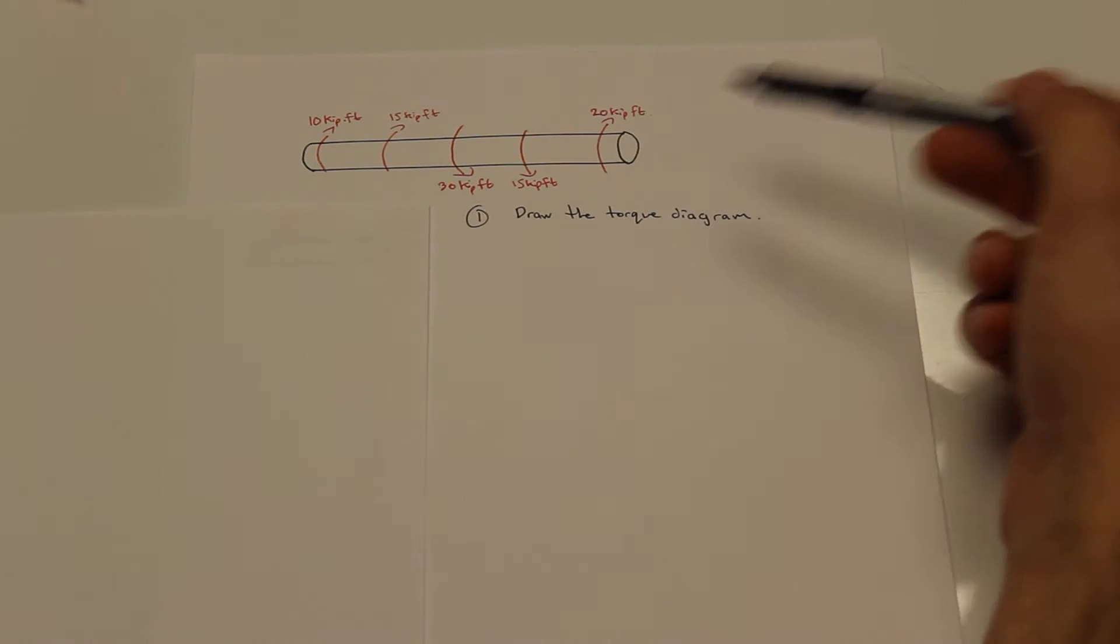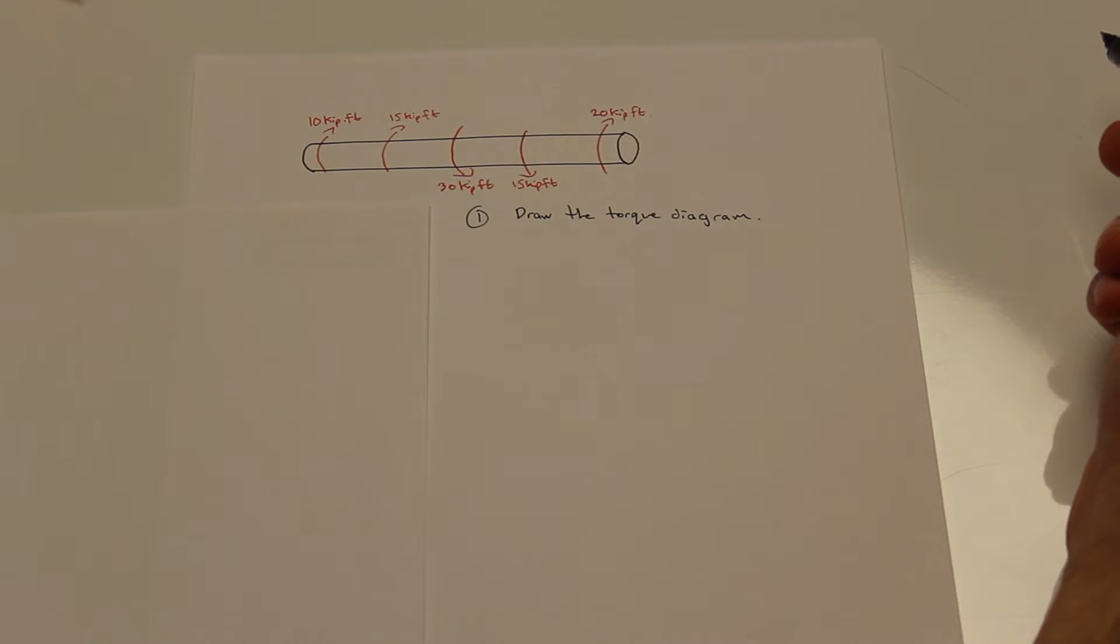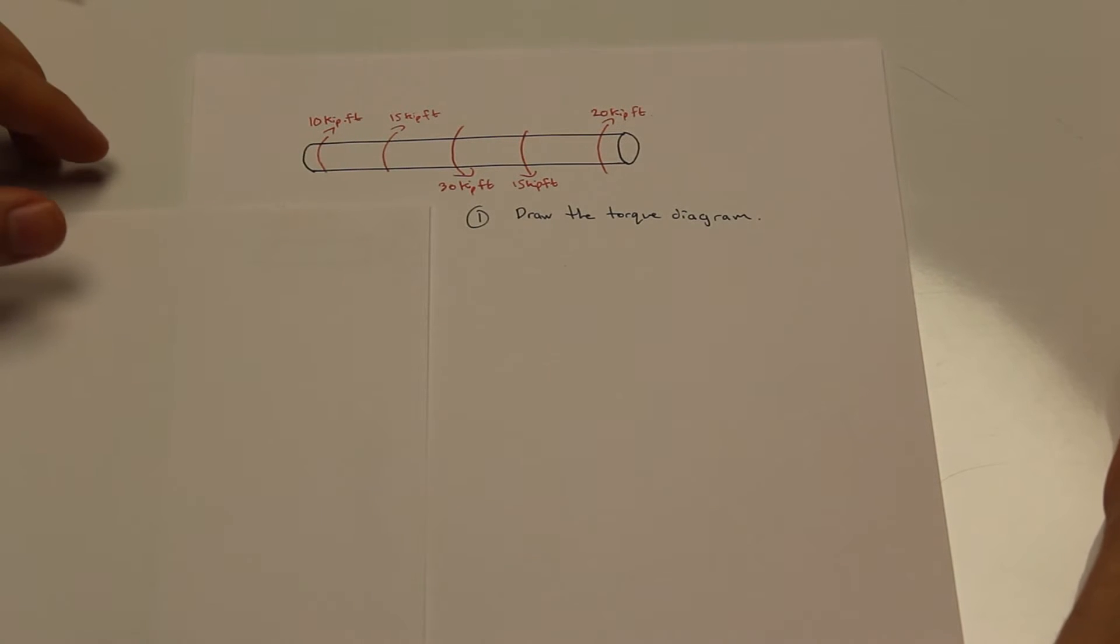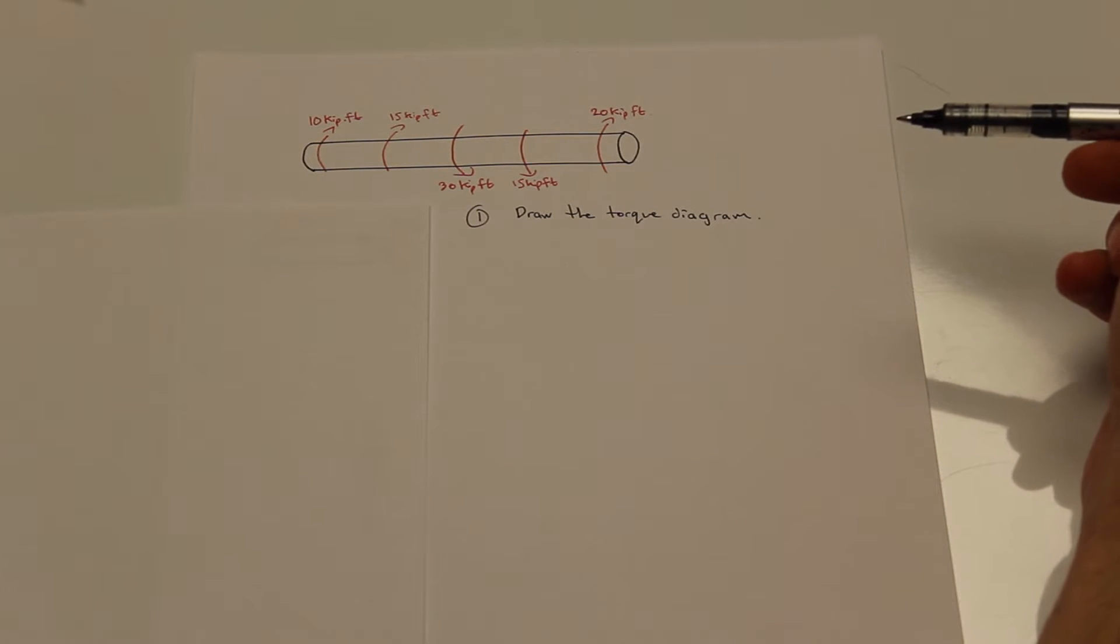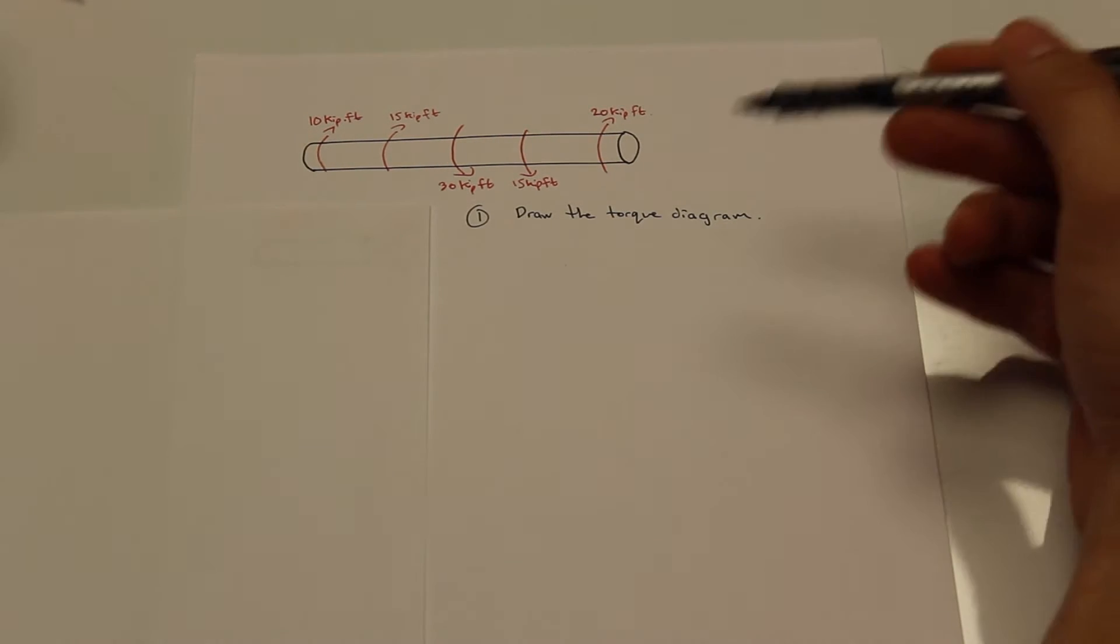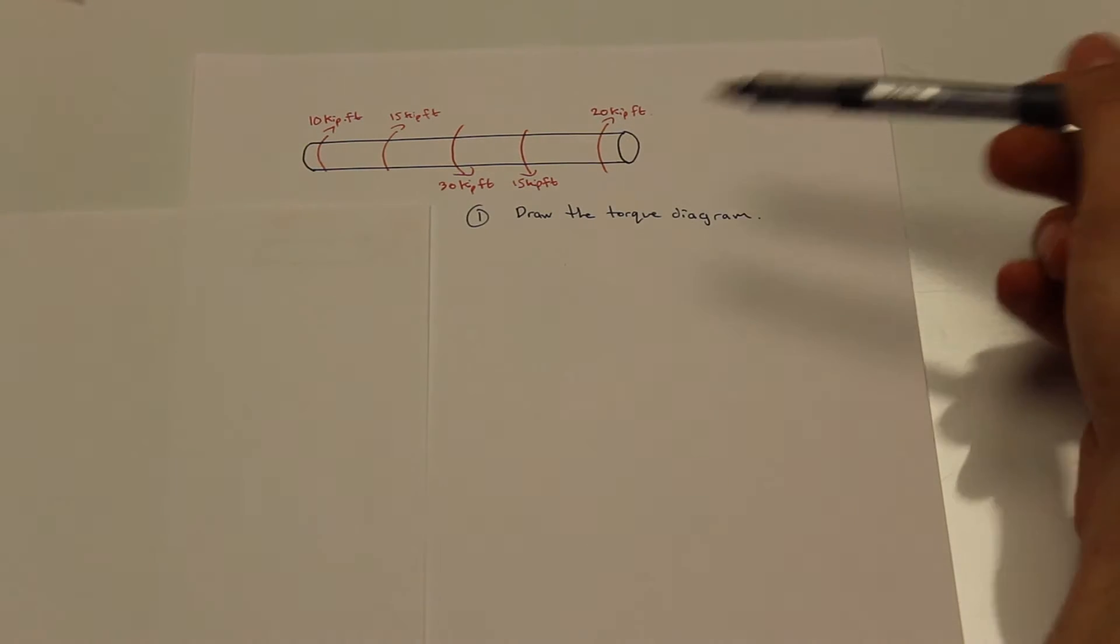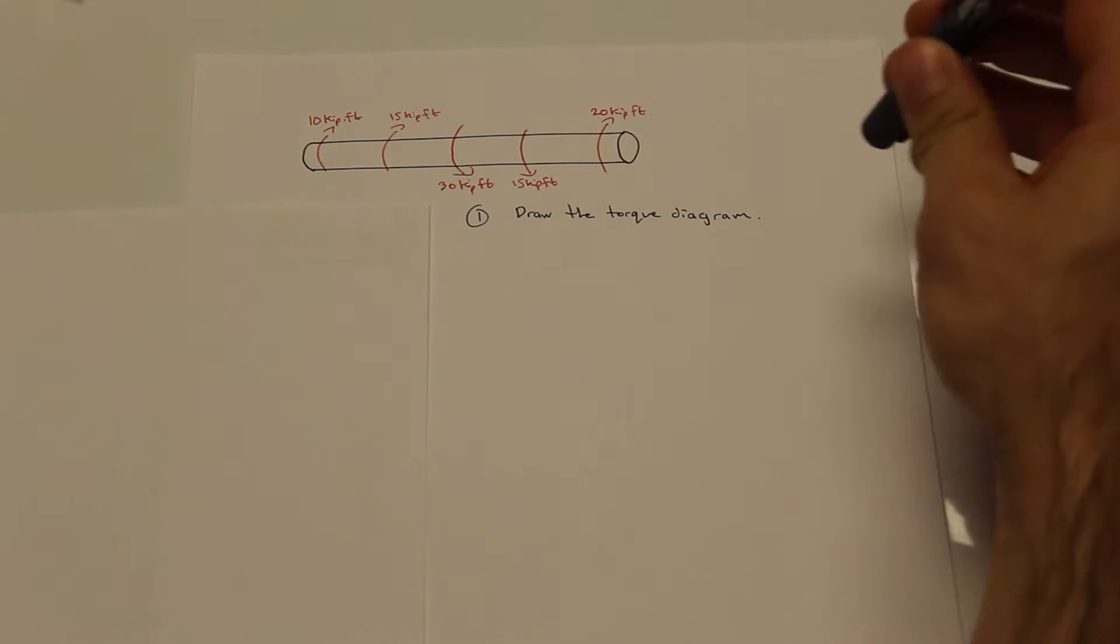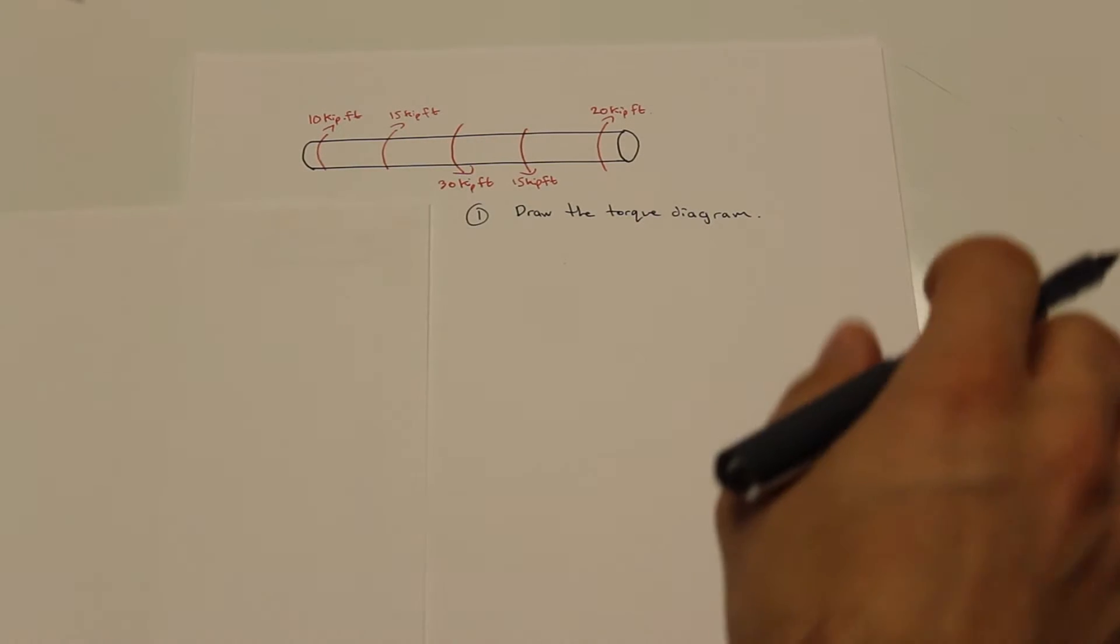Those are more for the angle of twist, but we'll get to that later. For this question all we have to do is draw the torque diagram. They're not asking for anything else and it's actually very simple. The tricky thing about these types of questions is the direction. Now the direction might start to confuse you a little bit. Just remember that you need to assign a positive direction right when you start and then follow that. There are other times there are sign conventions that we'll use. We'll get to that later. For this one I'll show you what to do.